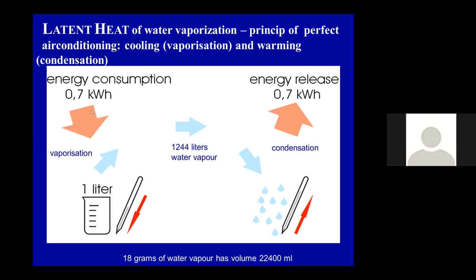How is it with the evaporation of water? One liter of liquid water — to evaporate it you have to add 0.7 kilowatt-hours, which is the capacity of one car battery. You get water vapor, but a huge amount: 1200 liters of water vapor is made from one liter of liquid water. There is a lot of energy stored here.